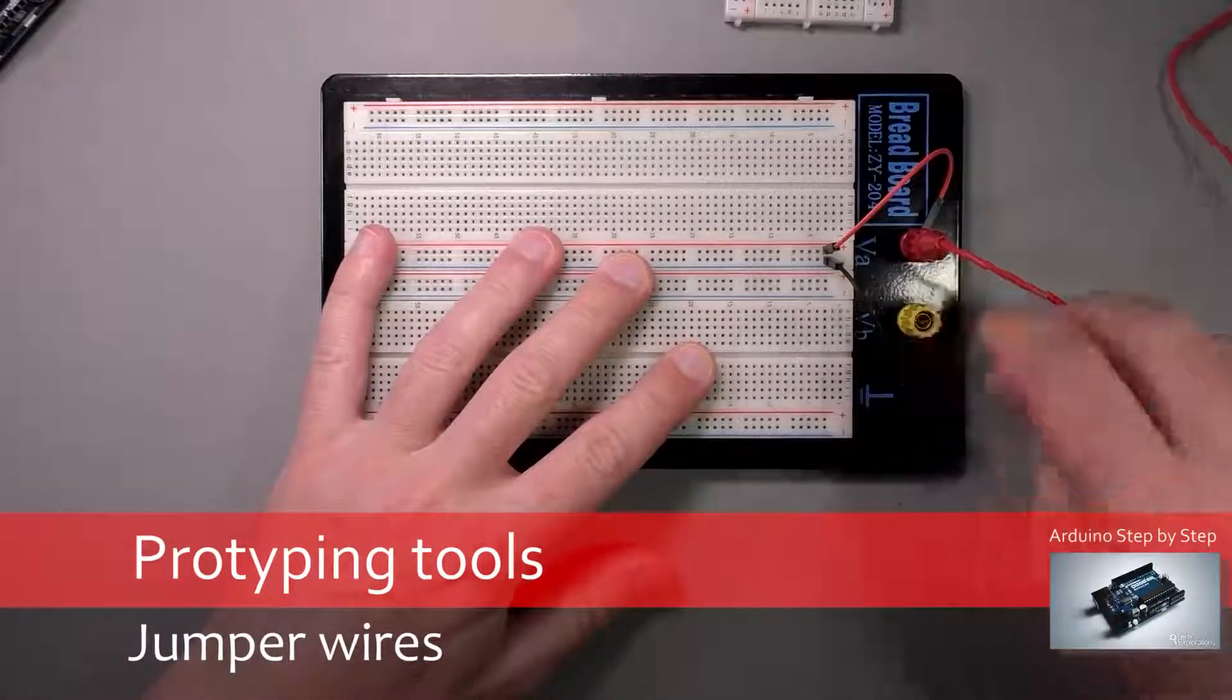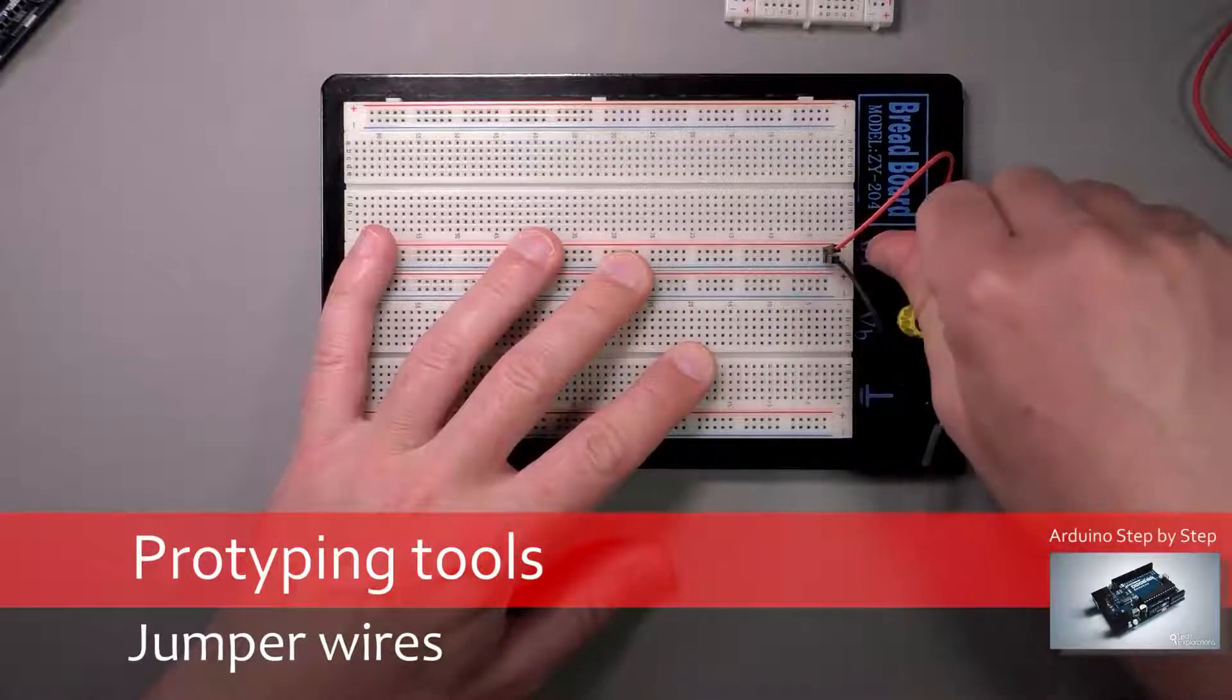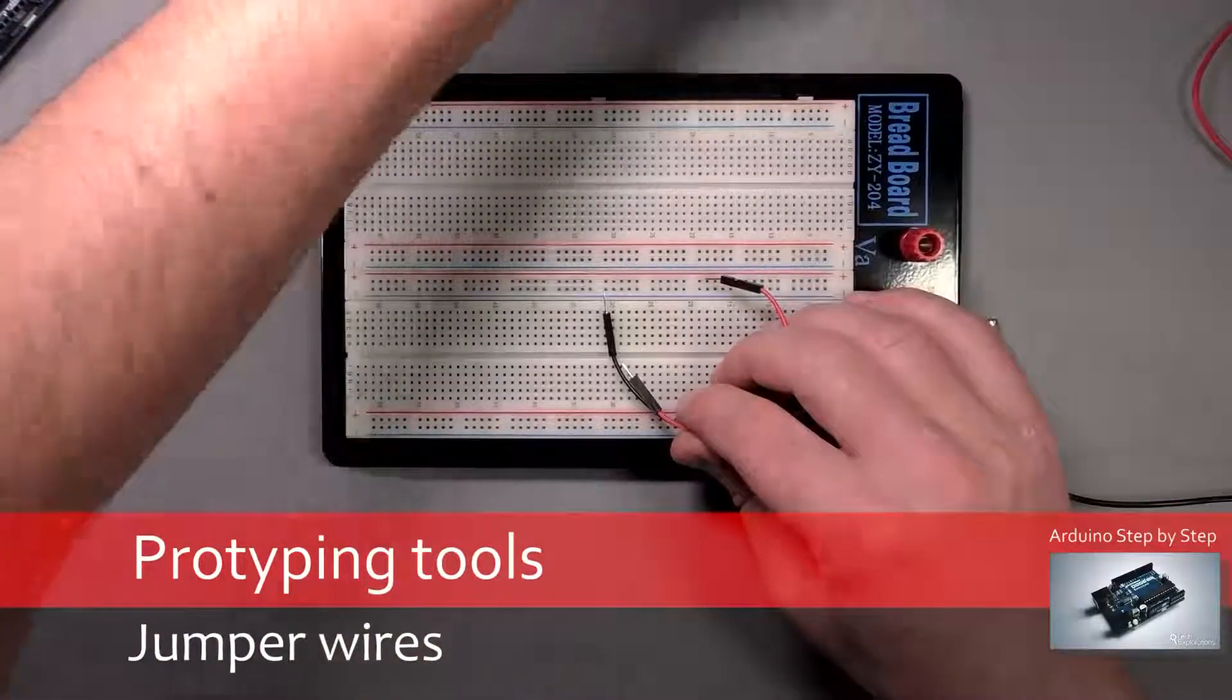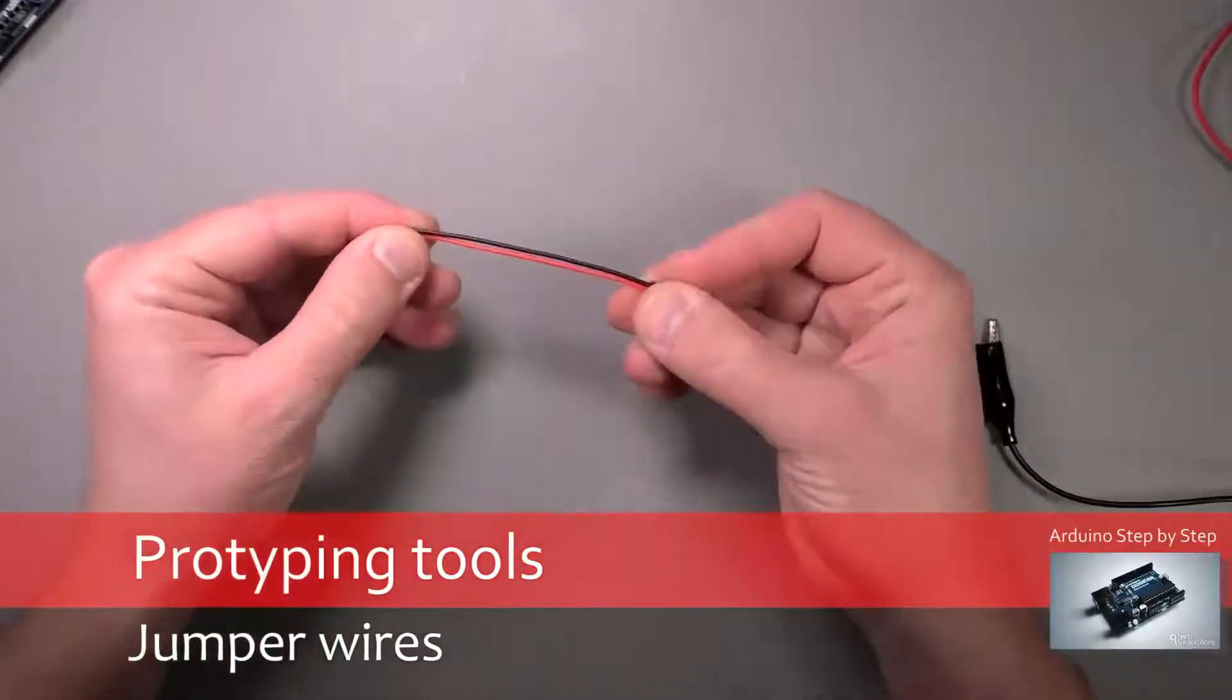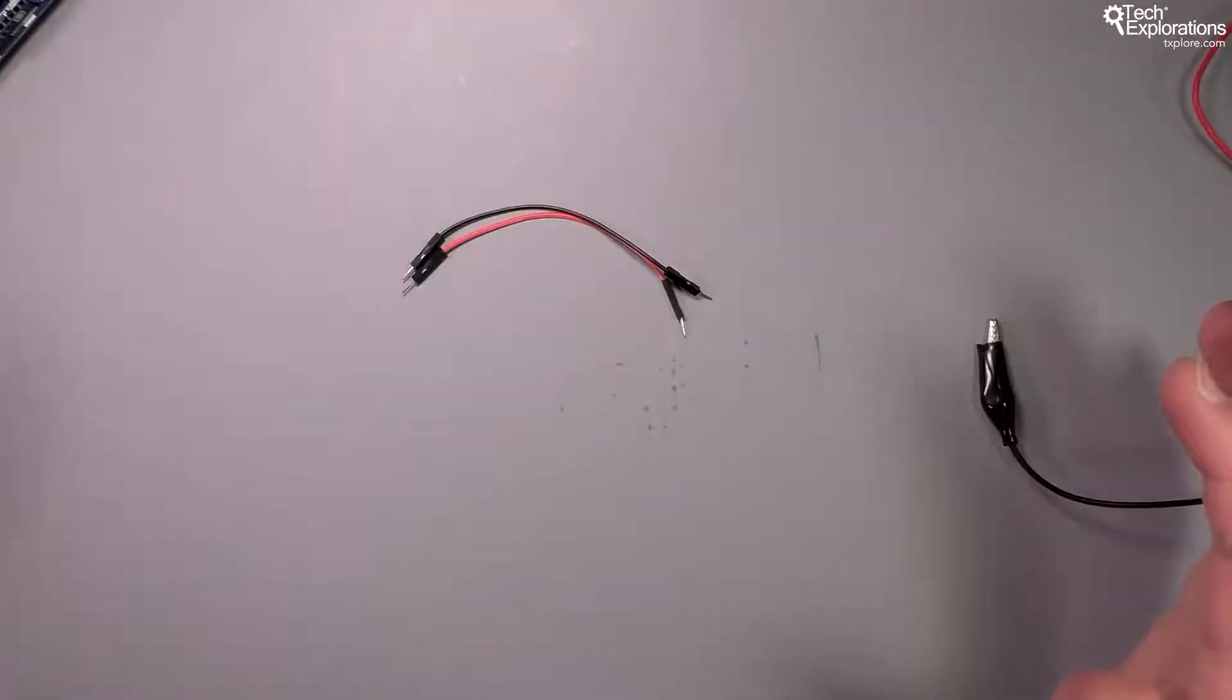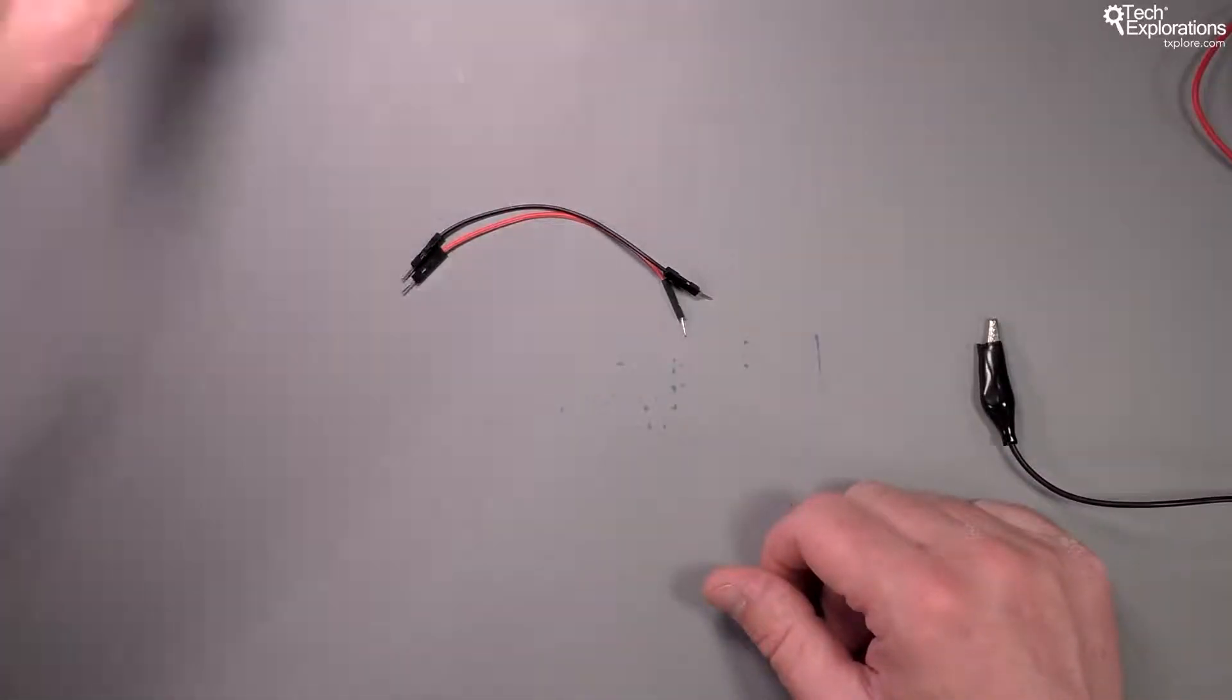Now let's talk about jumper wires. You've already seen a couple of types of jumper wires, but there's a few more that I'd like to talk about as well. Jumper wires give you the ability to connect components on or off a breadboard, and they come in different types.